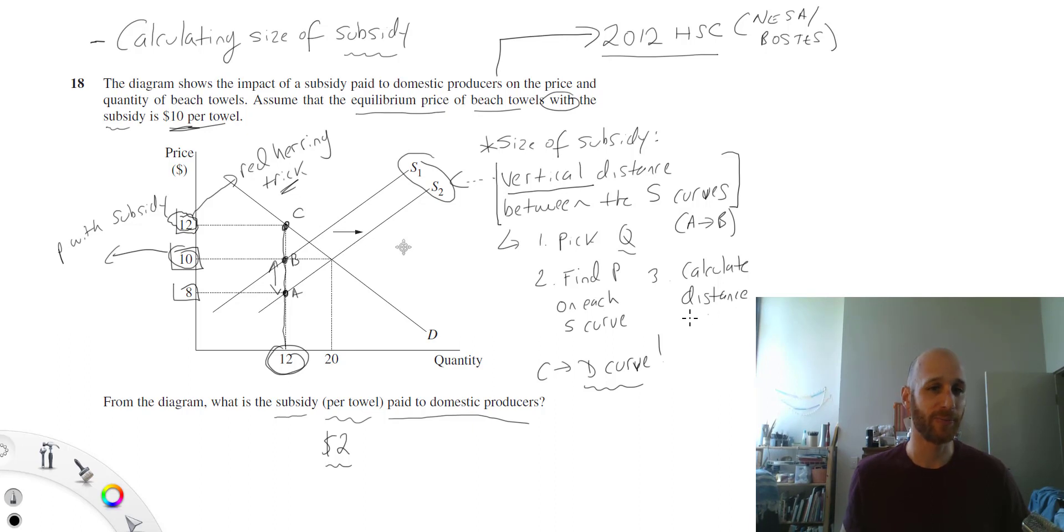This is how we work out the size of a subsidy. Just remember that this is $2 per unit. So for each towel that's produced, the government is paying producers $2 per unit.